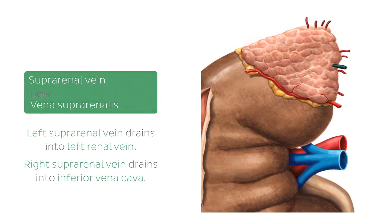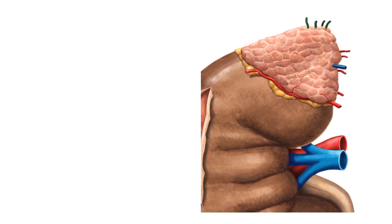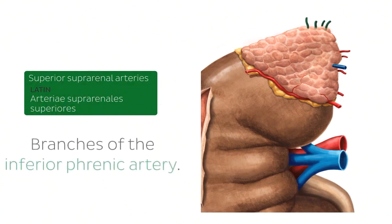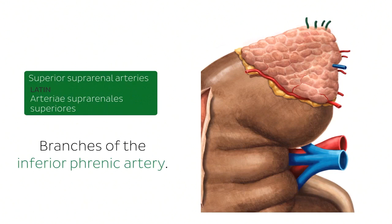The next structures highlighted in green are known as the superior suprarenal arteries. They are located on the superior surface of the adrenal glands and are branches of the inferior phrenic artery. These arteries supply the adrenal gland and are part of a group of three types of suprarenal arteries.